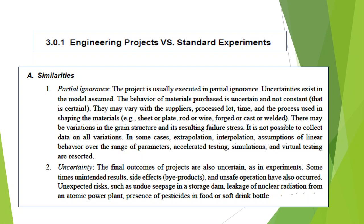Engineering projects have similarities with standard experiments. The first similarity is partial ignorance. Both projects and standard experiments have some partial ignorance — sometimes the materials purchased are uncertain or inconsistent, suppliers may vary, and time may vary. Whether conducting experiments at various times, in various situations, or with various vendors, both may have partial ignorance and uncertainty.